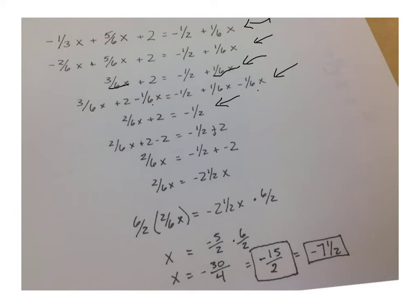So the next step is to move this two to the right so that all of our numbers can be on the same side of the equal sign. So in order to do that, I'm going to subtract two from both sides. So I have negative one-half minus two. But we know that whenever you see a subtraction sign, you add the opposite.